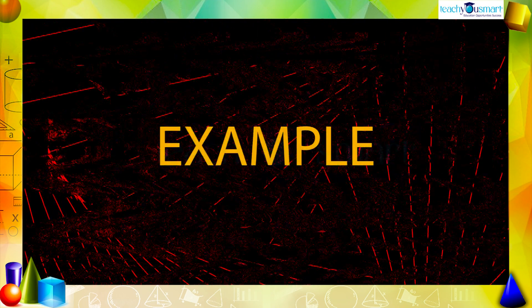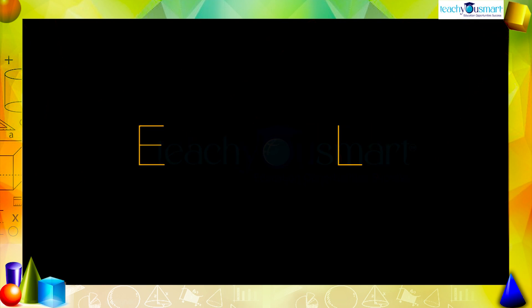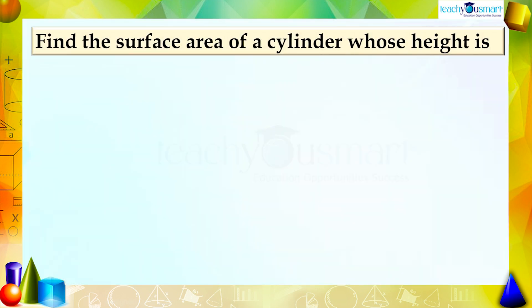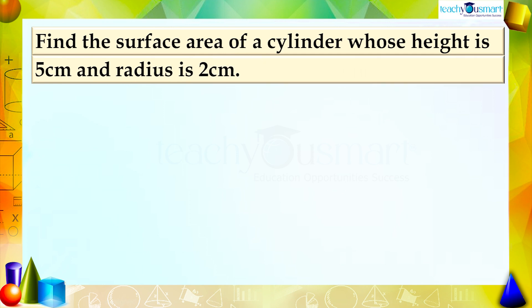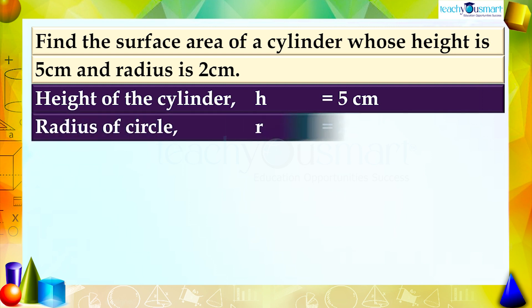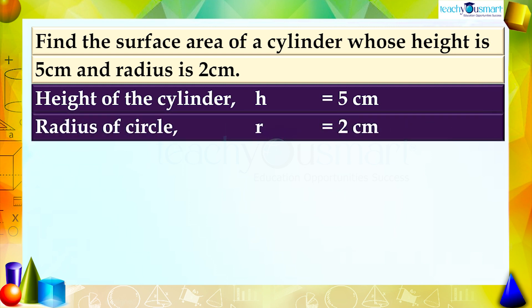Let's see an example. Find the surface area of a cylinder whose height is 5 centimeters and radius is 2 centimeters. Given that the height of the cylinder h equals 5 centimeters and the radius of the circle r equals 2 centimeters.